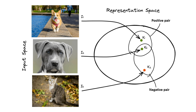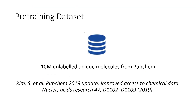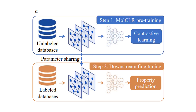Contrastive learning takes advantage of the inherent information present in the data itself. To do that, first they scrape 10 million unlabeled molecules from PubChem. Then they use it to pre-train the graph neural network models via MoCLeR to learn representative features, which is then followed by a supervised fine-tuning process for downstream molecular property prediction tasks.